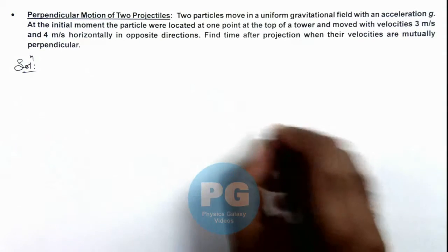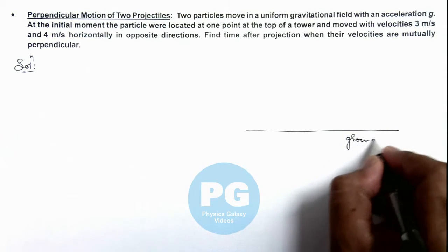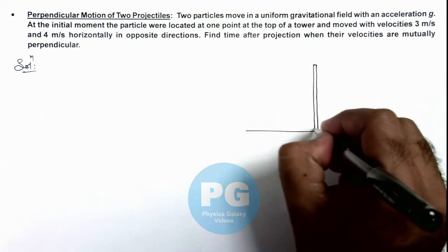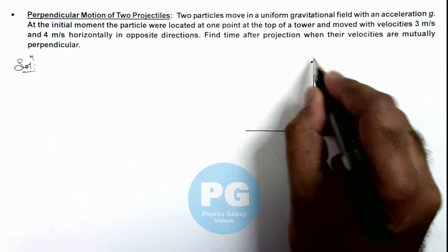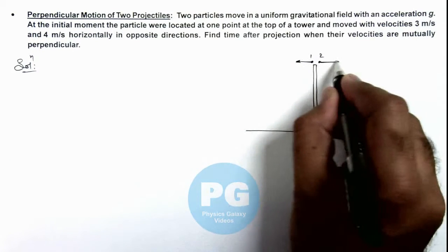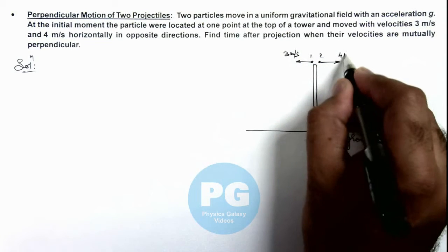If we draw the situation it is like this. On ground, here we consider there is a tower. From top of this tower, two particles 1 and 2 are projected in opposite directions with the speed of 3 meters per second and 4 meters per second.